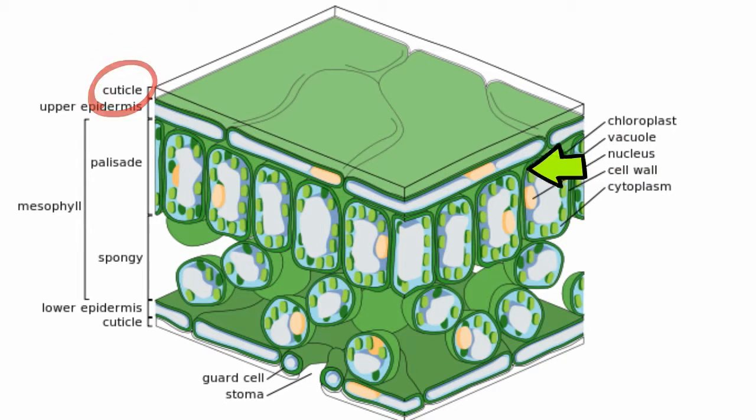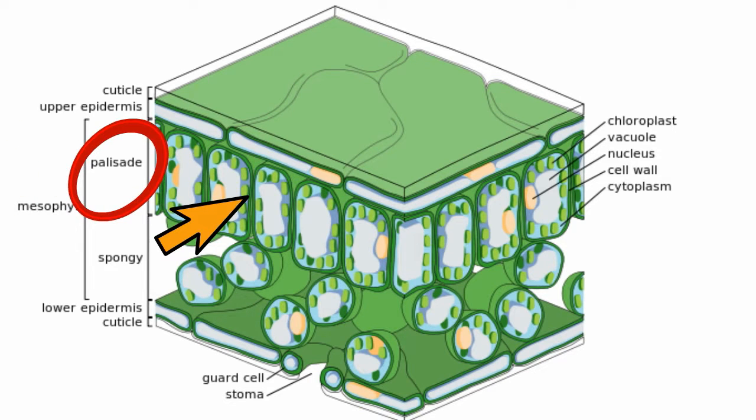Underneath that you will find surface cells. Next you have the upper leaf cells also called the palisade mesophyll. They contain chloroplasts and trap the energy in sunlight for the process of photosynthesis.